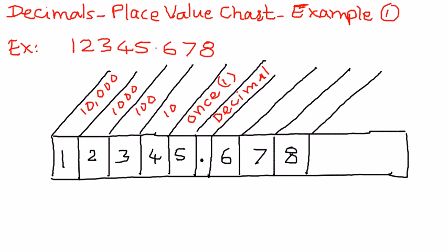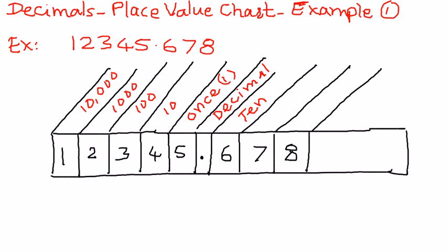— these numbers are the tenths place, then this is 1 over 100, or the hundredths place, and this is 1 over 1,000, the thousandths place, and so on. We can have the ten-thousandths place, 1 over 10,000; 1 over 100,000, and so on. This is how we represent decimal numbers in the place value chart.